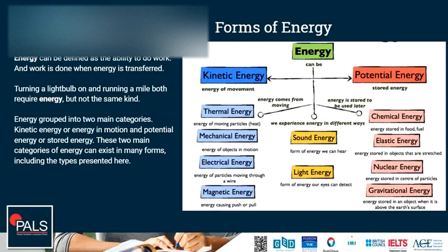Forms of potential energy are chemical energy. This is a form of energy that is stored in chemical bonds. Foods and fuels contain usually large amounts of chemical energy.